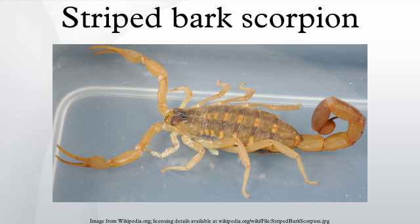Behavior. While the genus Centruroides implies this species as a semi-arboreal one, the striped bark scorpion spends a substantial amount of its time on the ground and can be found under rock and surface debris, within vegetation, and in weathered rural structures like old sheds and barns during the day. The terrestrial preferences of this species carry into the night hours, when the scorpion will emerge from its shelter at or after sunset to forage for potential prey. Juveniles, however, spend a substantial amount of time in vegetation, likely to avoid predation to which they are more vulnerable.